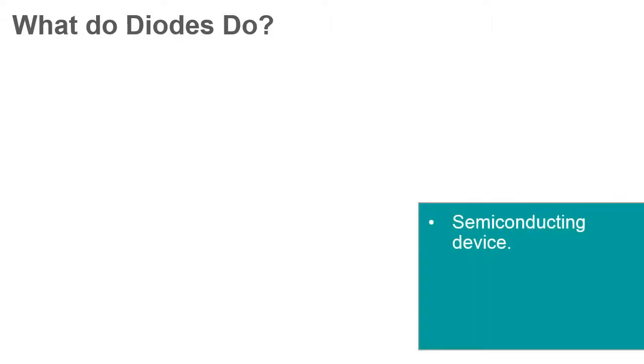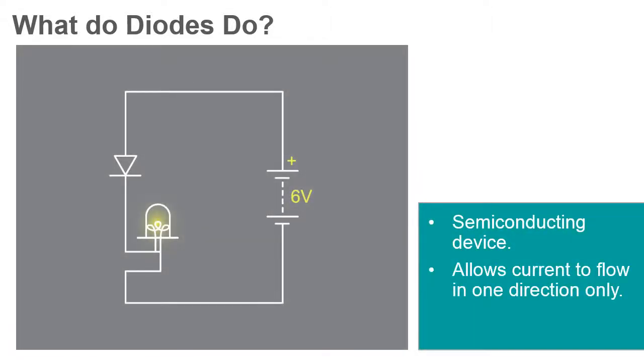A diode is a semiconducting device which allows current to flow in one direction but not the other. It might help to think of a diode as a one-way street for current.